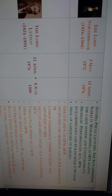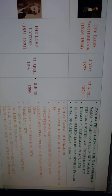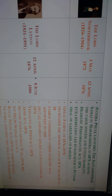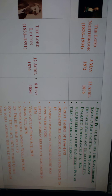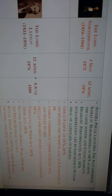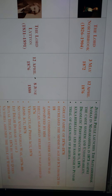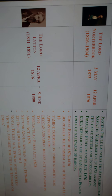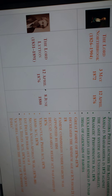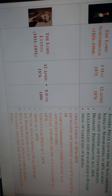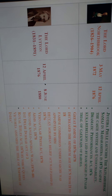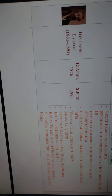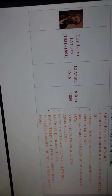The Satyashodak Samaj was launched by Jyotiba Phule in Maharashtra in 1873 against untouchability and the caste system, during Lord Northbrook's period. The Dramatic Performance Act of 1876 was also passed by Lord Northbrook. The Kuka Rebellion led by Ram Singh in Punjab also occurred during his period, as did the trial of the Gaikwad of Baroda.